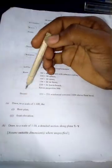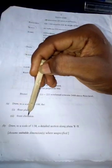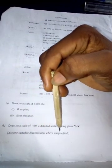The question is: (a) Draw to a scale of 1 to 100 the floor plan and front elevation, then (b) Draw to a scale of 1 to 50 a detailed section along plane Y-Y. Assume suitable dimensions where unspecified.